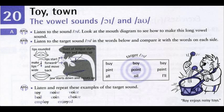95 B. Buy. Boy. Bay. Pint. Point. Paint. All. Oil. Isle.